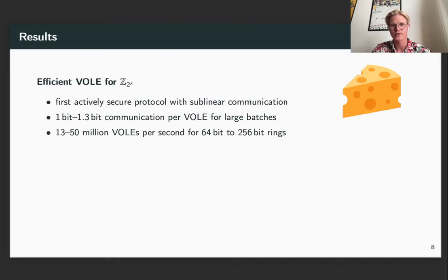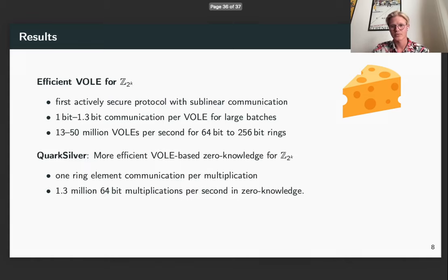So our results are the following. We are the first to provide an efficient vector OLE for Z2K which is actively secure. This only requires 1 bit to 1.3 bits communication per vector OLE for large batches and we can generate up to 50 million of these per second. We also provide the first way of efficiently checking multiplications in Z2K. This only requires one ring element communication per multiplication.